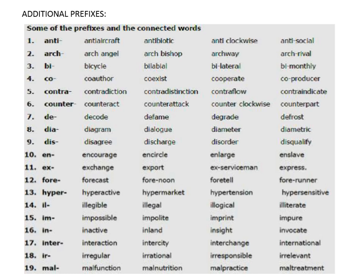Bi-: bicycle, bilabial, bilateral, bi-monthly. Co-: co-author, co-exist, cooperate, co-producer. Contra-: contradiction, contra-distinction, contra-flow, contra-indicate.